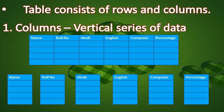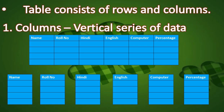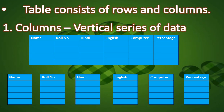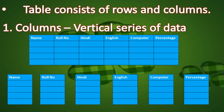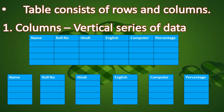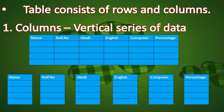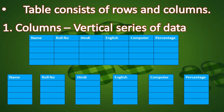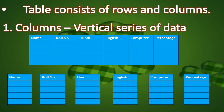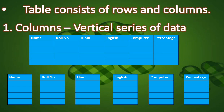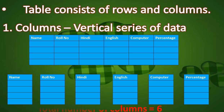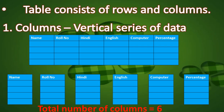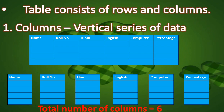These columns are vertical and contain the same type of data. In the name column you insert names, in the roll number column you insert roll numbers of each and every student. You cannot insert a name in the roll number column — it must only contain roll numbers. So in this table the number of columns is six; a column is a vertical series of data.